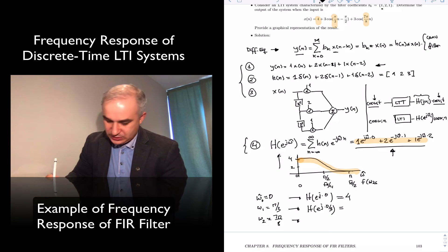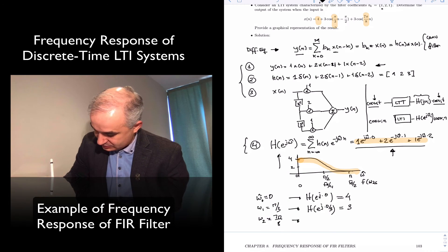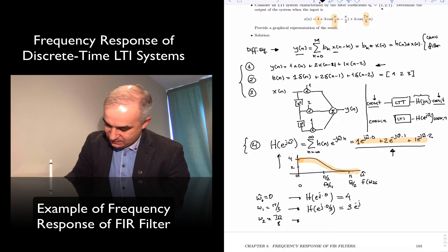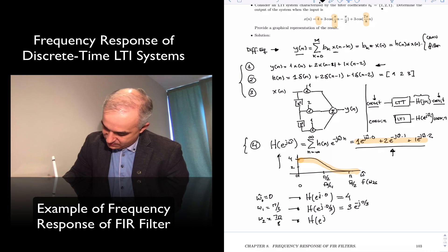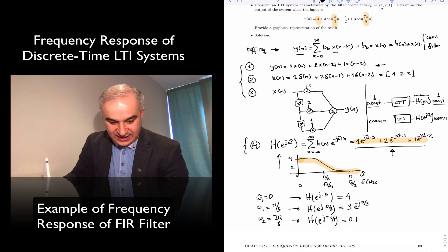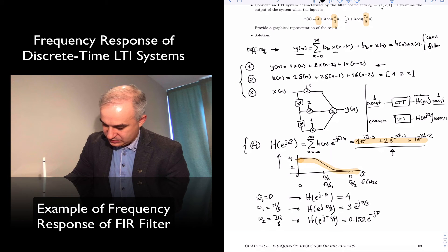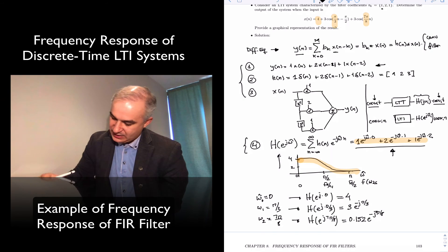And this is equal to 3. So, that's the magnitude. So, e to the minus j pi over 3, that's the phase that you're going to have. H(e^j 7π/8) is 0.152 e to the minus j 7 pi over 8. So, this is highly attenuated.